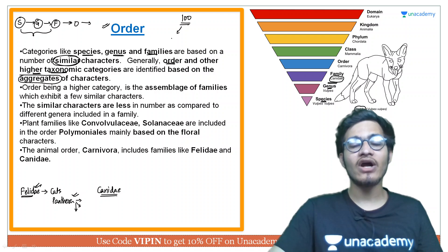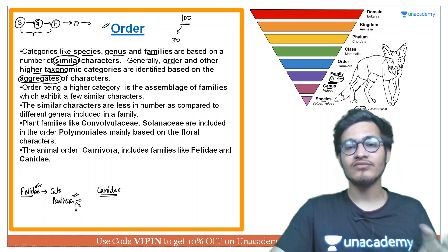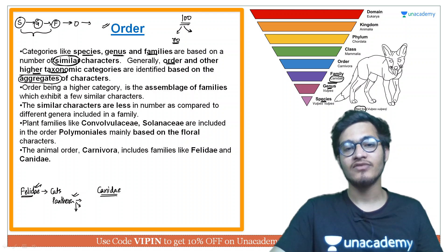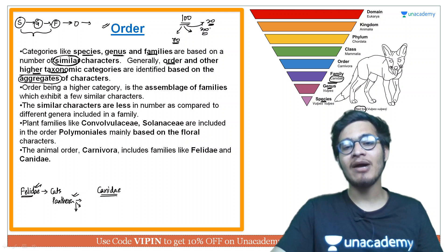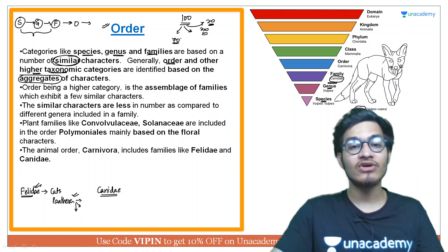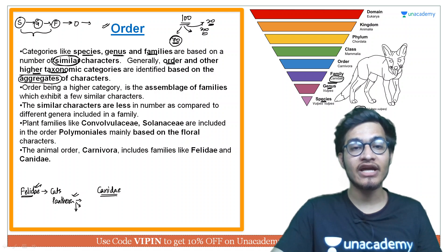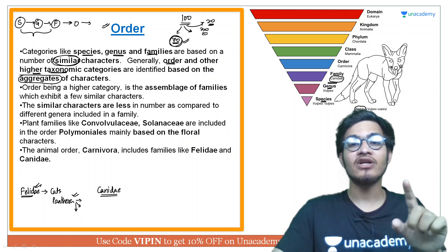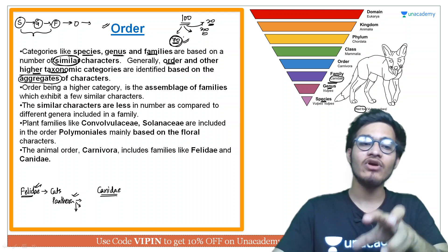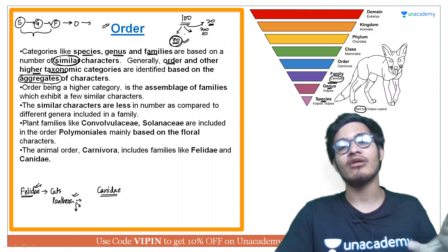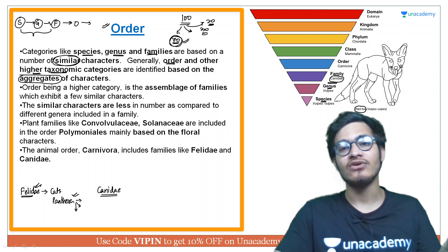Consider two organisms from different categories: if 70 characters out of 100 are common between them, and another pair shares only 20 or 30, you look at the aggregate and say that more characters are common in these particular organisms — so you can place them in the same order.